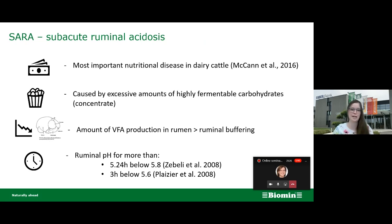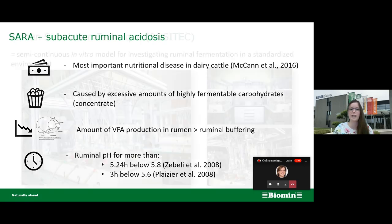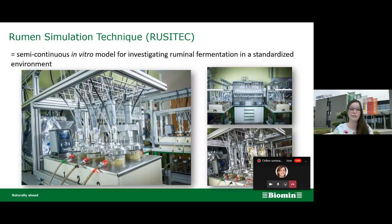Now that we have established that subacute ruminal acidosis can have a high impact and an important influence on economic losses in dairy cattle, we can explore how to actually investigate this. One option is to use the rumen simulation technique, in short RUSITEC. This is a semi-continuous in vitro model which is well established for investigating ruminal fermentation in a standardized environment, and it also allows us to simulate subacute ruminal acidosis.